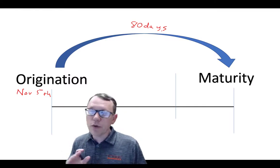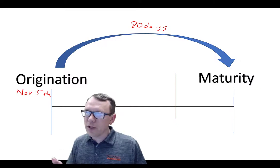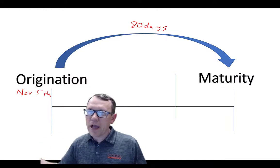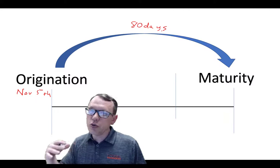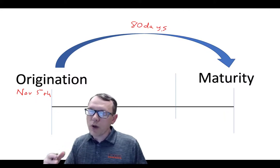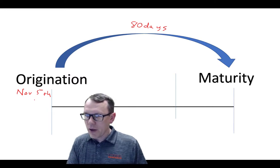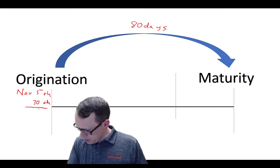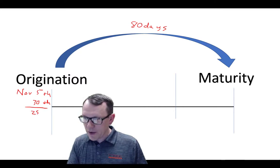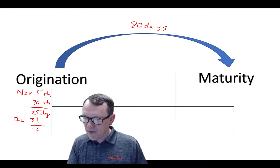We know the beginning date but we don't know the ending date. So what we can do to figure out the ending date is go manually through the calendar year and figure out how long it's going to take from origination to maturity. We already know it's 80 days. November has 30 days, so that's 25 days in November, and then we can tack on December.